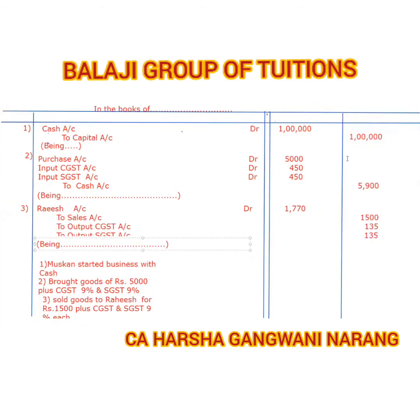Now we have learned this, I will summarize it about input CGST and output CGST — pay attention. So this is simple. What did we do? Muskan started a business with cash — cash account debit to capital.